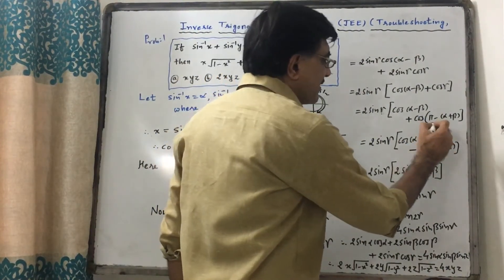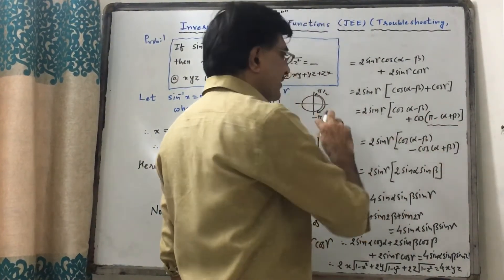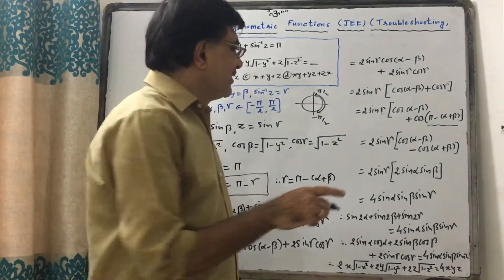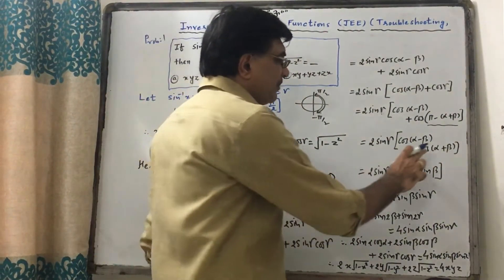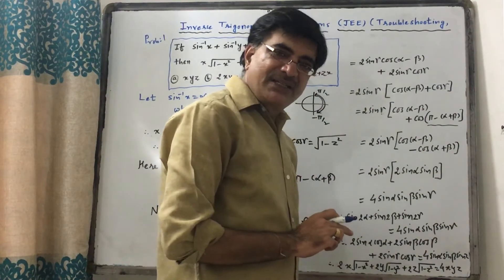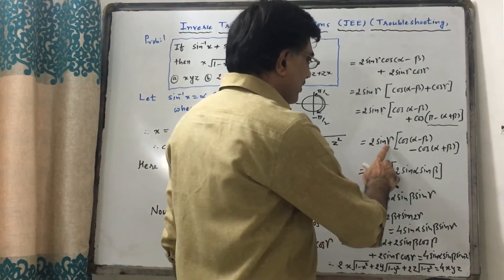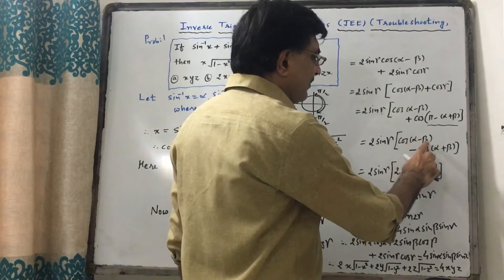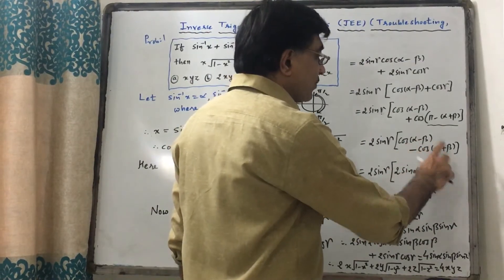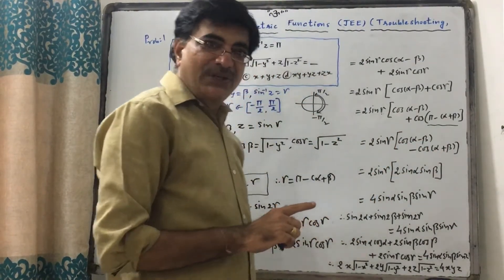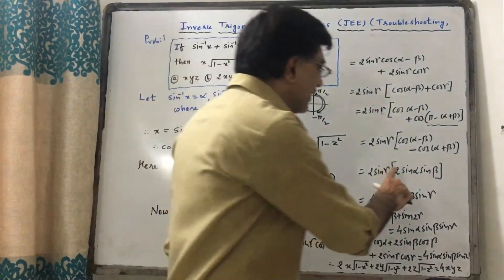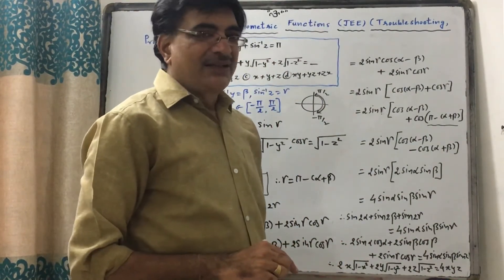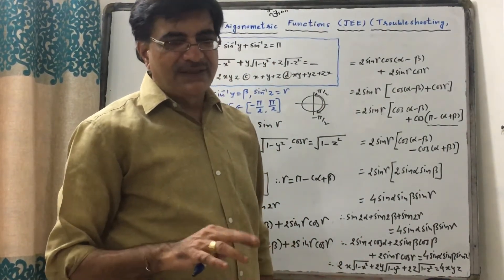So we have 2sinγ·[cos(α − β) + cos(π − (α + β))]. This is in the second quadrant, where cosine is negative. So cos(π − (α + β)) = −cos(α + β). It becomes 2sinγ·[cos(α − β) − cos(α + β)].